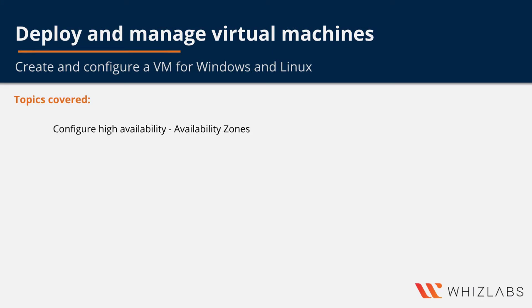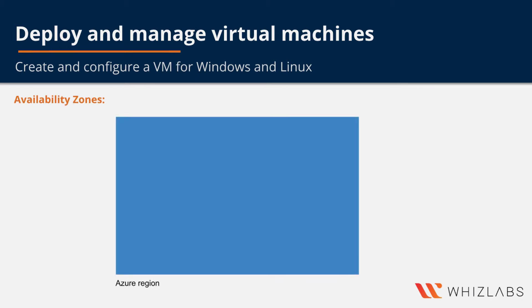Hello everyone. In this video we will talk about configuring high availability for your virtual machines, this time using availability zones. Availability zones are an alternative to availability sets and expand the level of control that you have to maintain the availability of the applications and data on your VM, and it protects your applications and data from data center level failures.